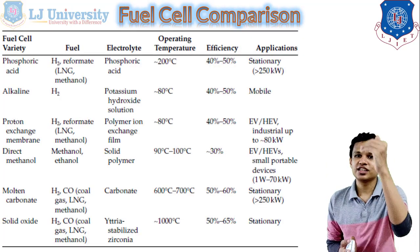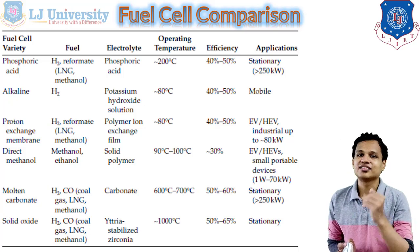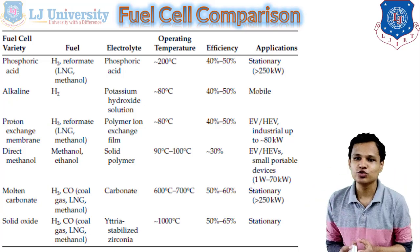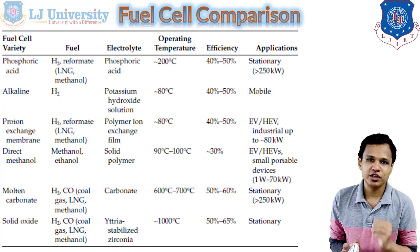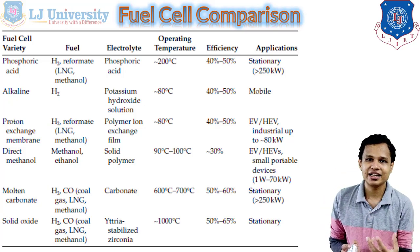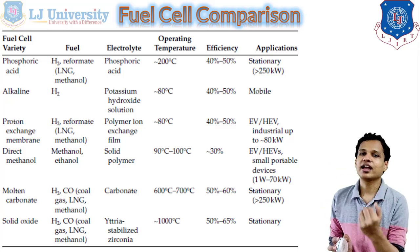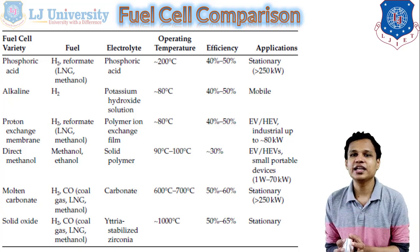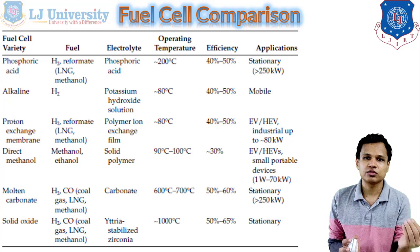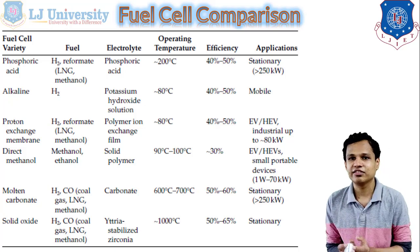Here is the comparison of the fuel cell types we have seen. The phosphoric acid fuel cell can only be used for stationary applications, not for electric vehicles. Its fuel can be H2 or reformatted H2 from LNG, and its electrolyte is phosphoric acid. The alkaline fuel cell uses H2 as fuel and can be used as a mobile application, so it has future scope for electric or hybrid vehicles.